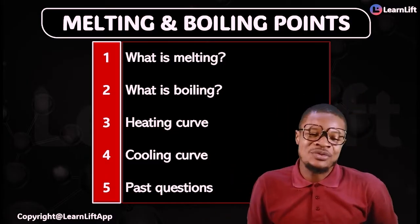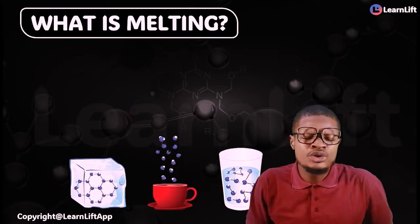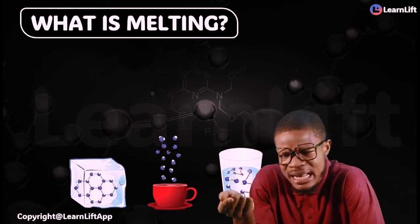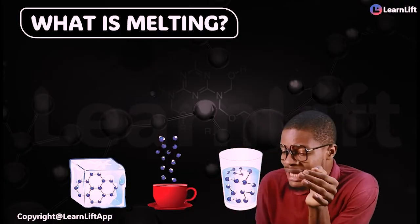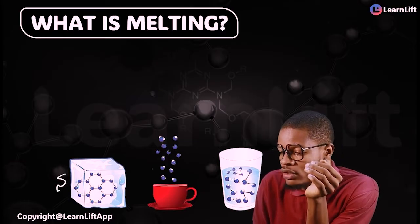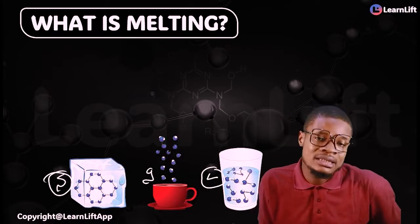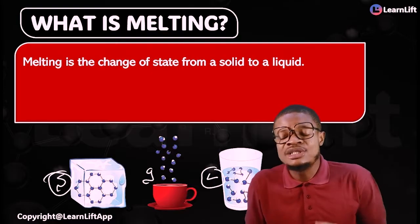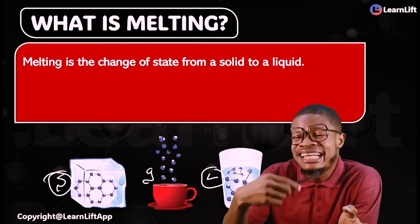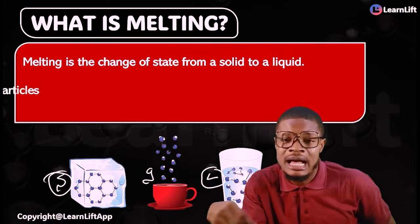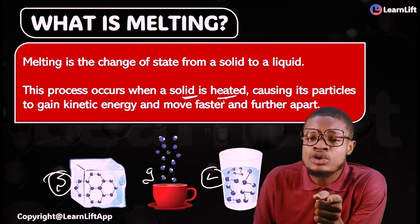So what is melting? For something to melt, it is transitioning from solid all the way to liquid. So melting is the change of state from solid to liquid. This process occurs when a solid is heated.